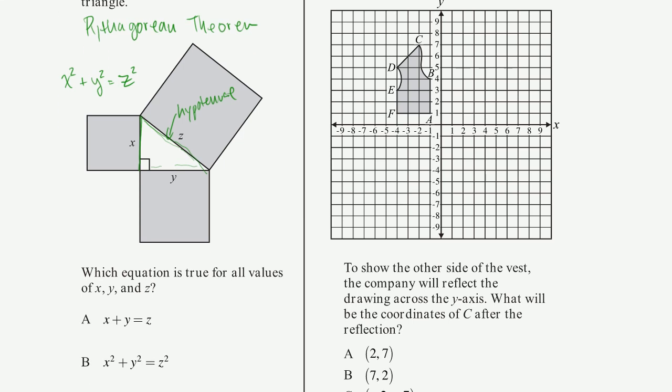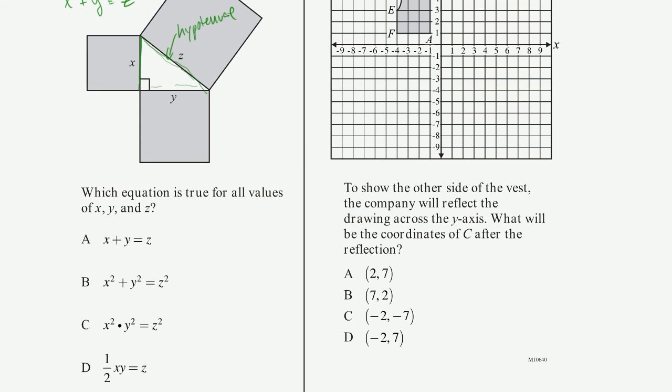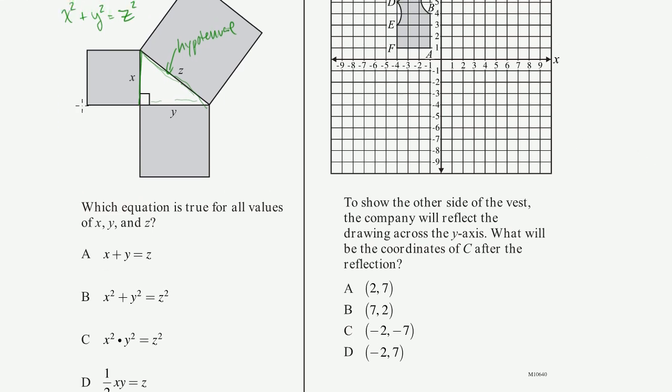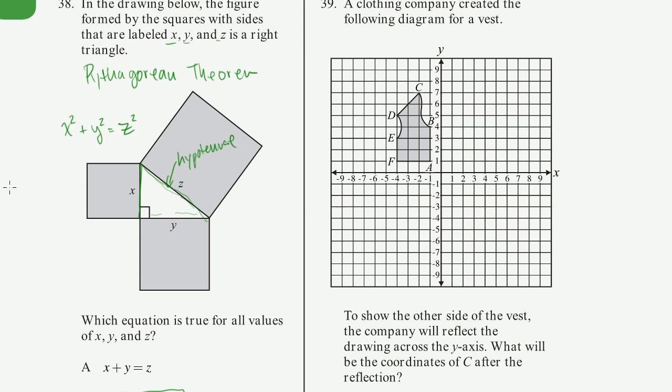And so if we look down here, only one of those match what I just wrote down, kind of my restatement of the Pythagorean theorem. x squared plus y squared is equal to z squared. And that's this one right there, choice B. Next problem.